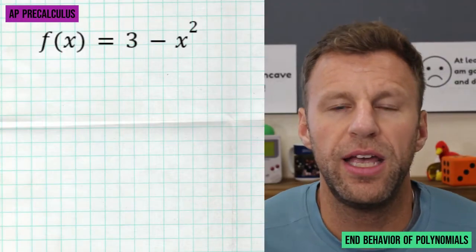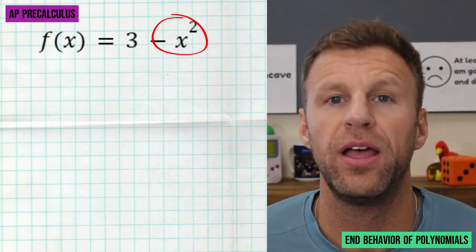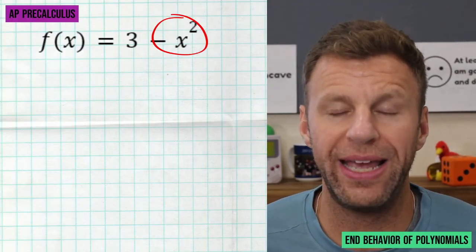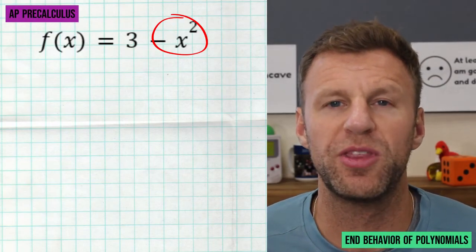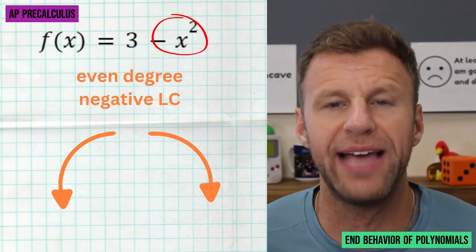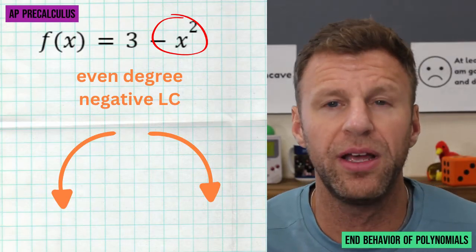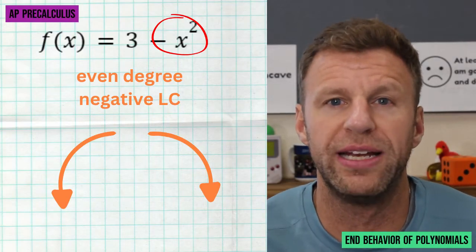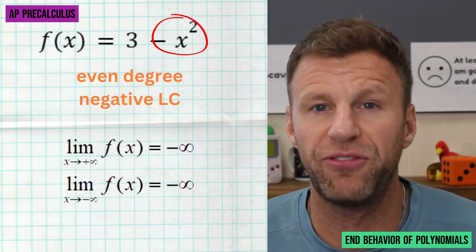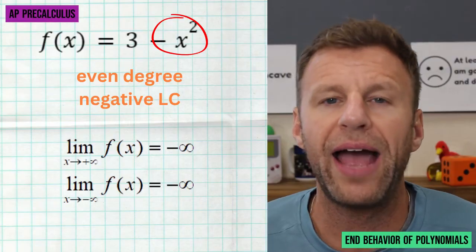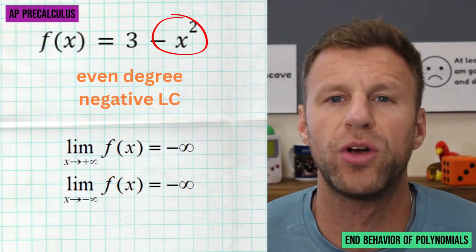Let's take a look at a couple of examples. In this first function, we identify that the leading term is negative x squared. Therefore our degree is even — two is an even number — and our leading coefficient is negative. That tells me both ends are going down. This means the limit of the function as x goes towards positive infinity is negative infinity, and the limit of the function as x approaches negative infinity is also negative infinity.